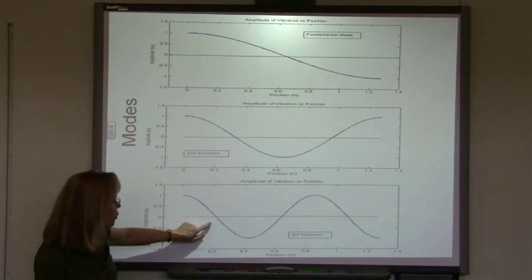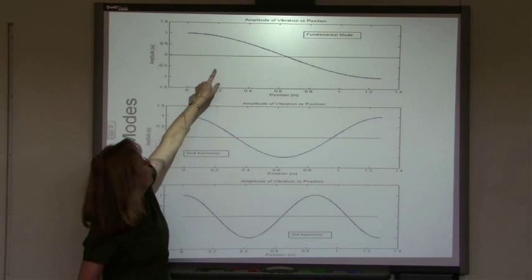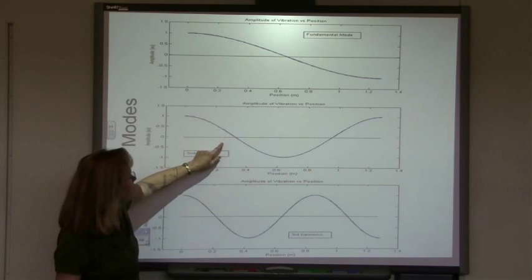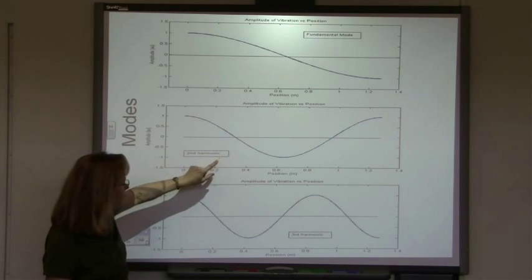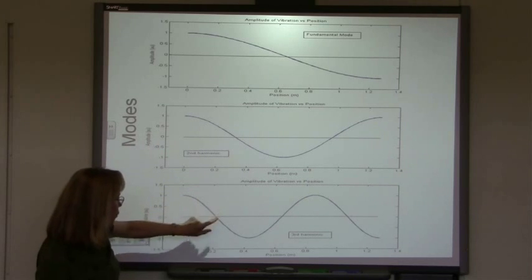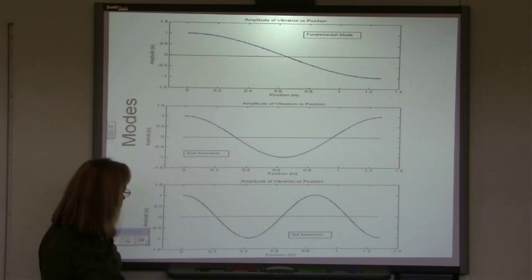And here's the third harmonic. So now, here we had a half a wavelength, here we had two half wavelengths, and here we have three half wavelengths along the rod.